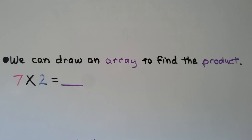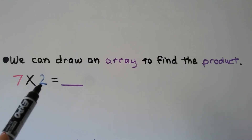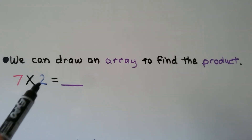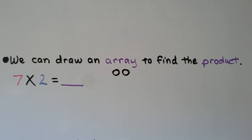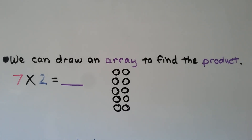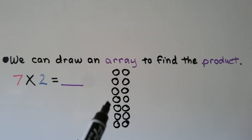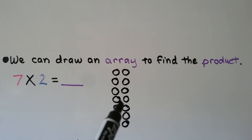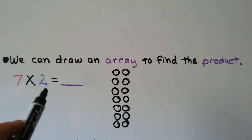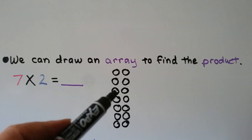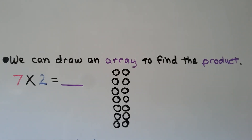We can draw an array to find the product. That's seven times two — seven rows of two. We have seven groups with two in each group. We can skip count by twos: 2, 4, 6, 8, 10, 12, 14. Seven times two is equal to 14.